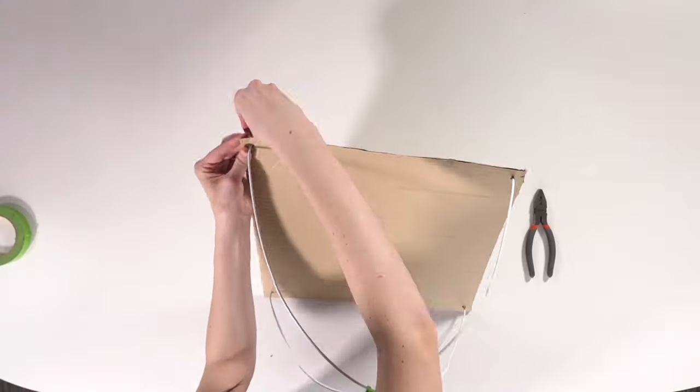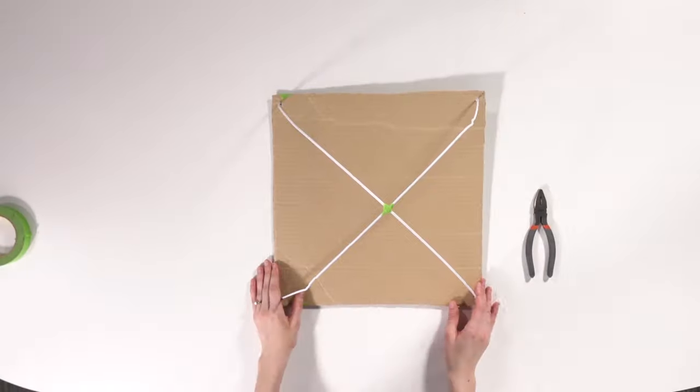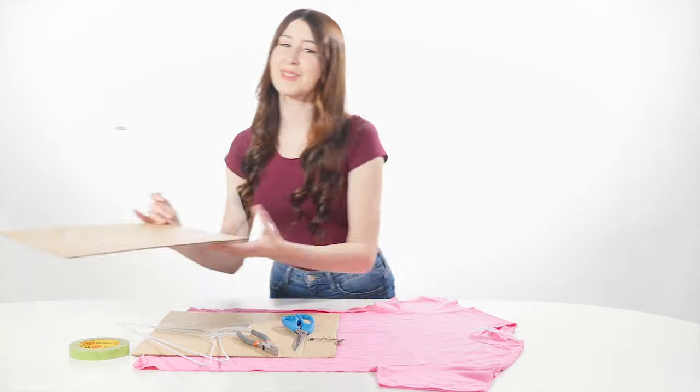Repeat the process with the other hanger on the two remaining corners, and you'll have a tent frame that looks something like this.